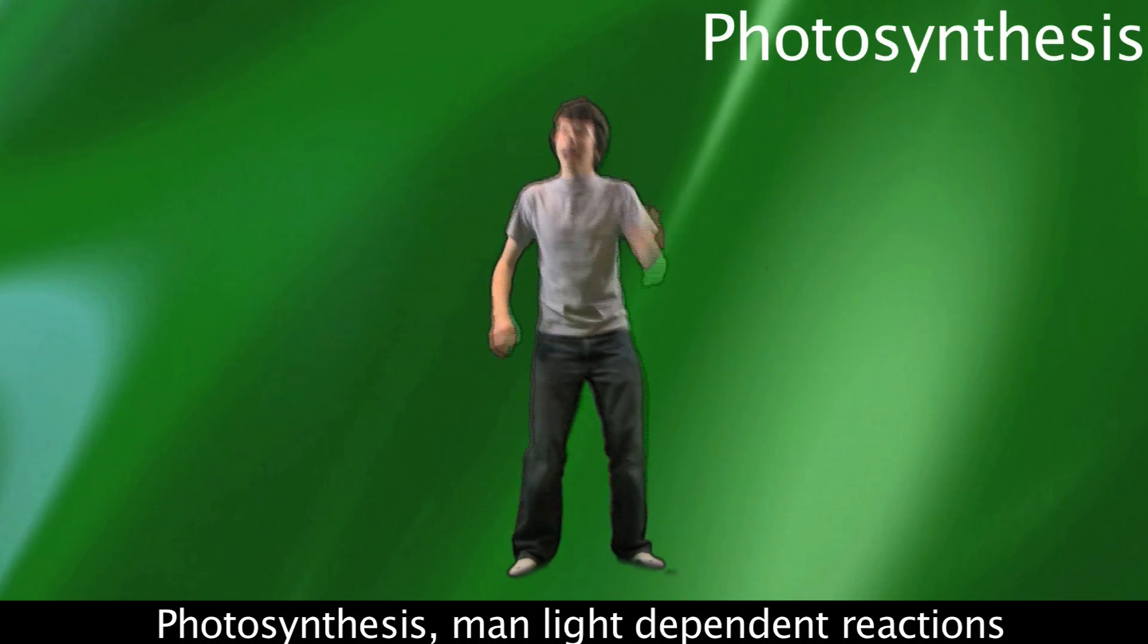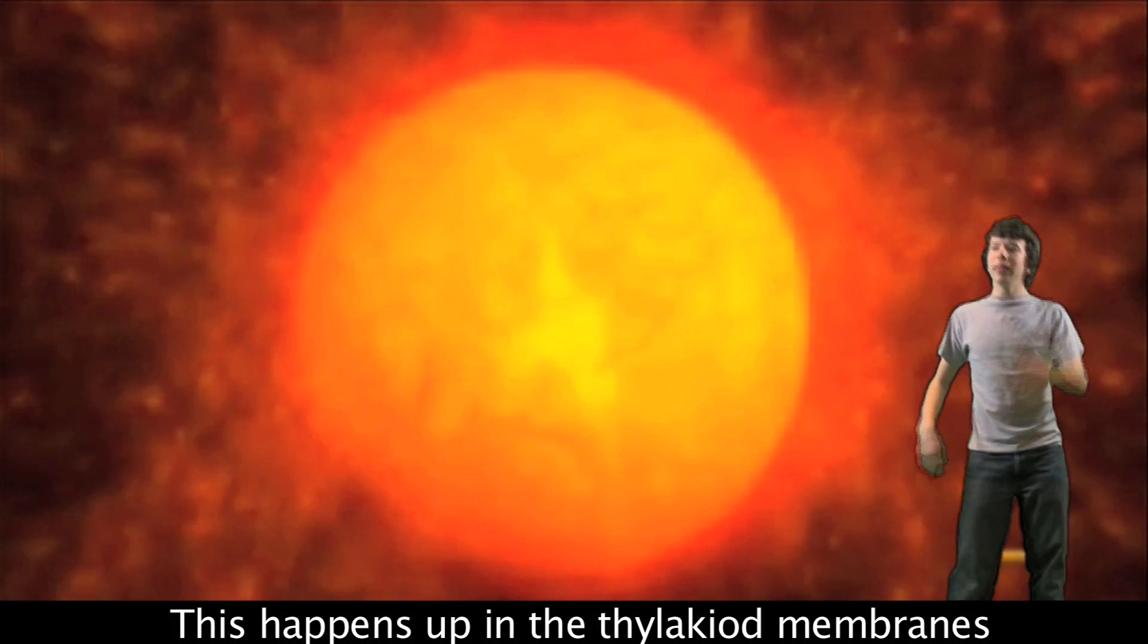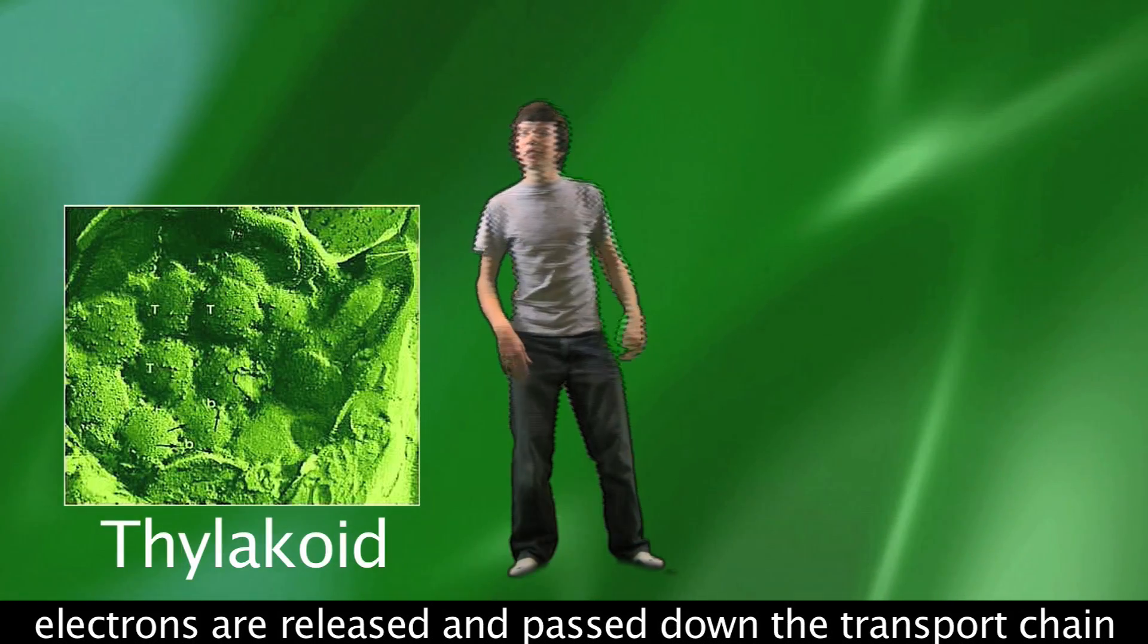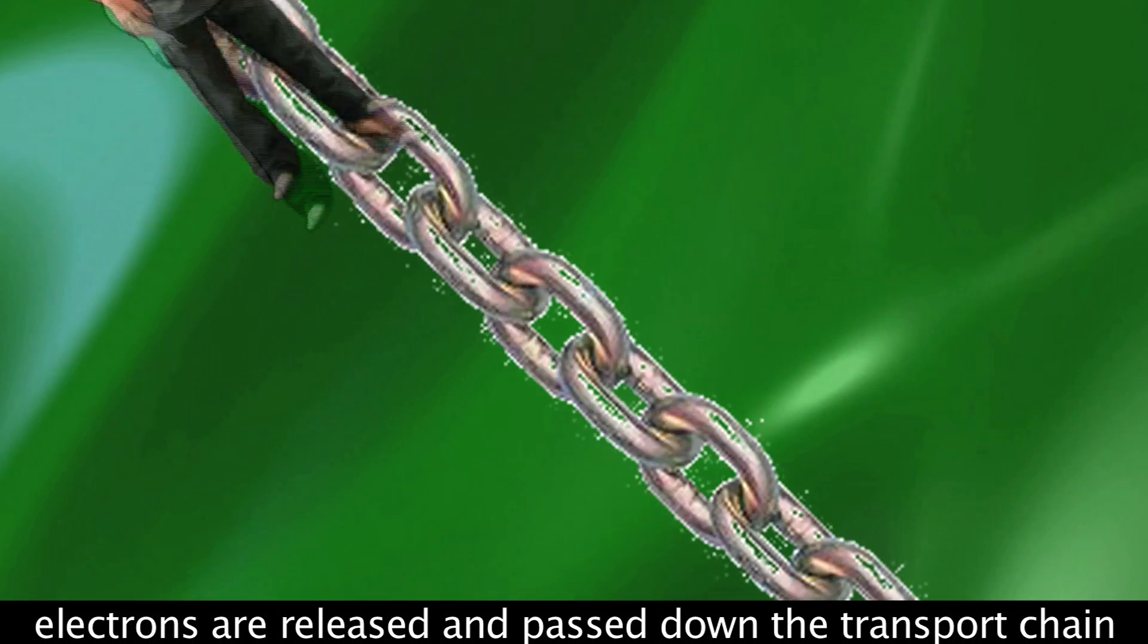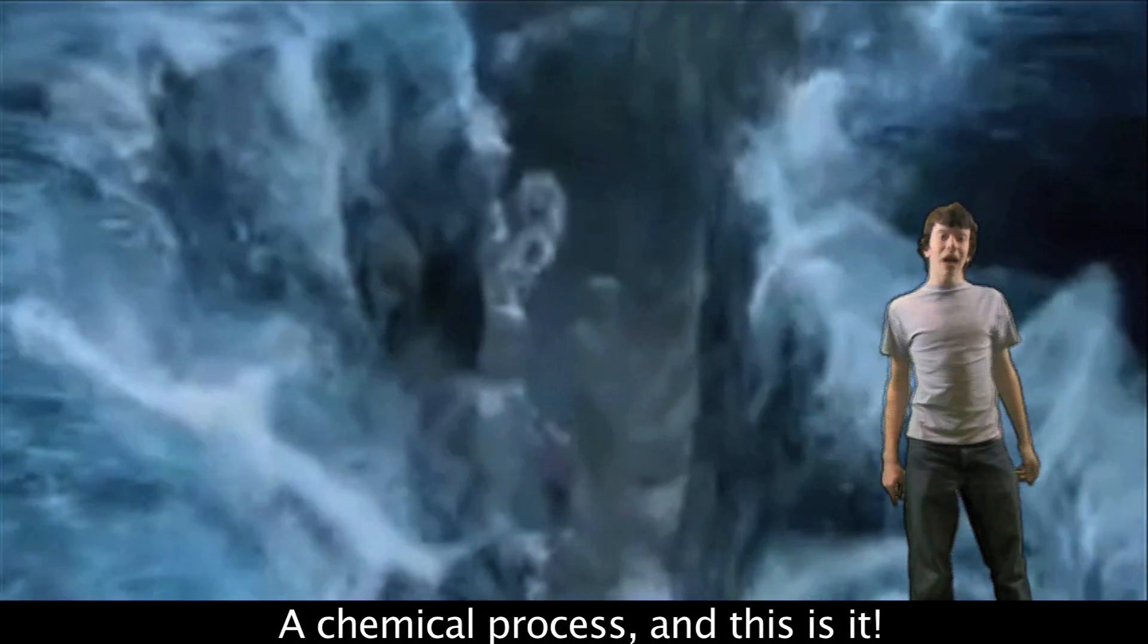Photosynthesis, man, light-dependent reactions happen in the chloroplasts. This happens up in the thylakoid membranes. Electrons are released and passed down the transfer chain. The H2O is splitting, man, this is what you get. A chemical process,